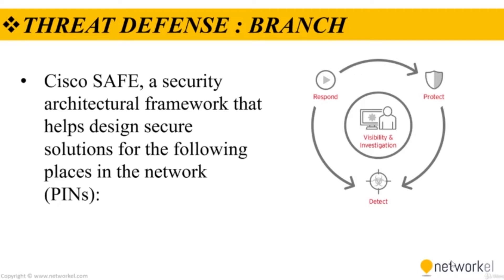Branches are typically less secure than the campus and data center because the potentially large number of branches makes it cost-prohibitive to apply all the security controls found in campus and data center locations. Branch locations are therefore prime targets for security breaches. Top threats at branch include endpoint malware, wireless infrastructure exploits such as rogue APs and man-in-the-middle attacks, unauthorized client activity, and exploitation of trust.